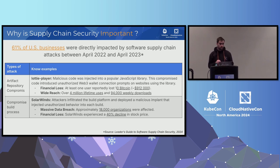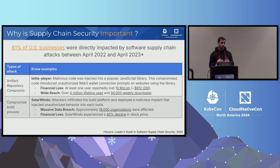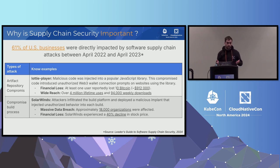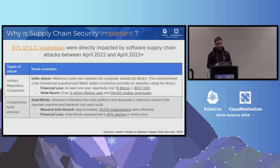I can give you two examples of supply chain attacks. One is very recent — it was about the Lottie Player NPM packages. In this case, malicious code was put inside these NPM packages, resulting in a malicious Web3 wallet connection — a cryptocurrency transaction — shown to users who were using the library without knowing. The impact was massive: more than 4 million lifetime downloads, and one user reported losing 10 Bitcoin, which is almost $1 million today.